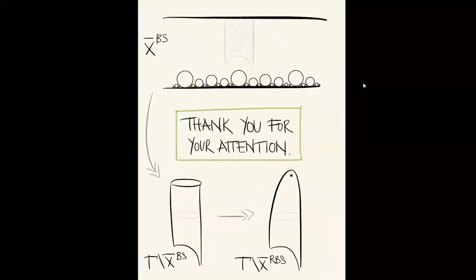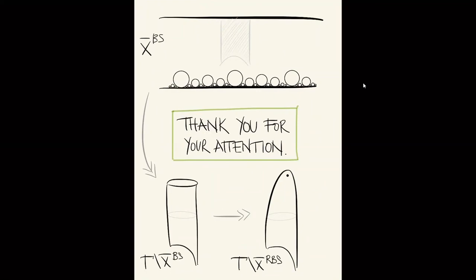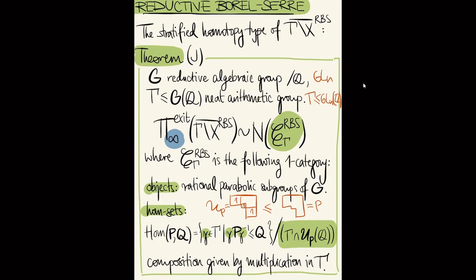Thank you. Let's thank Michala. Are there any questions or comments? — Yes. So your theorem about the exit path category of the reductive Borel-Serre compactification: is there a version for the Borel-Serre where one can say the exit path category is the nerve of something? — Yes, it's exactly the same thing, but you don't mod out by the unipotent radical.